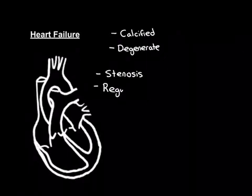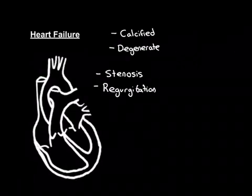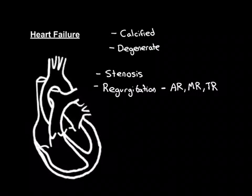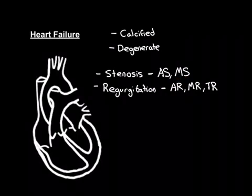Then there's regurgitation: aortic regurgitation, mitral regurgitation, pulmonary regurgitation, and tricuspid regurgitation. The most important ones are aortic regurgitation, mitral regurgitation, and tricuspid regurgitation — you don't hear much about pulmonary regurgitation. Of stenosis, the two main ones are aortic stenosis and mitral stenosis.